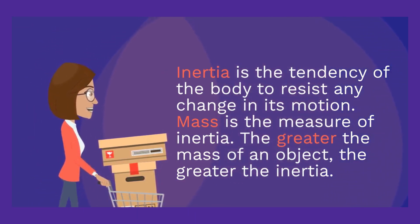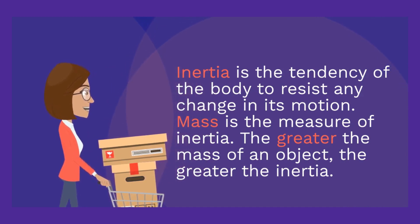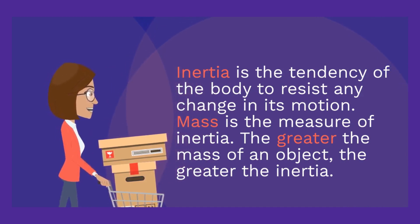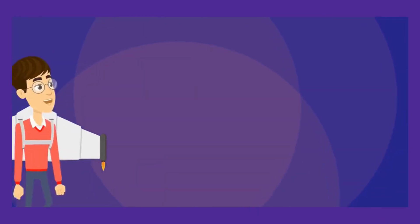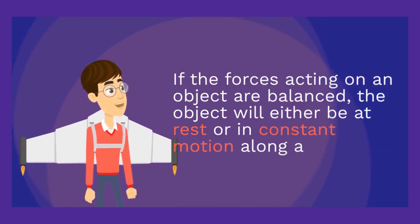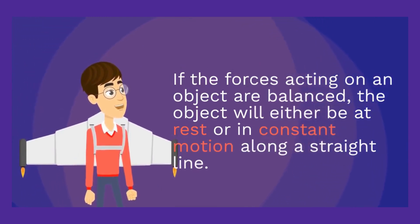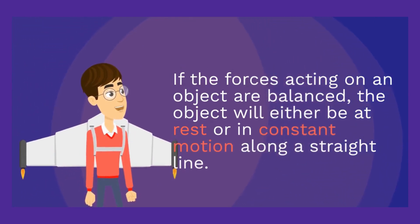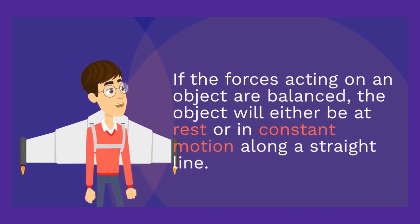Mass is the measure of inertia. The greater the mass of an object, the greater the inertia. If the forces acting on an object are balanced, the object will either be at rest or in constant motion along a straight line.